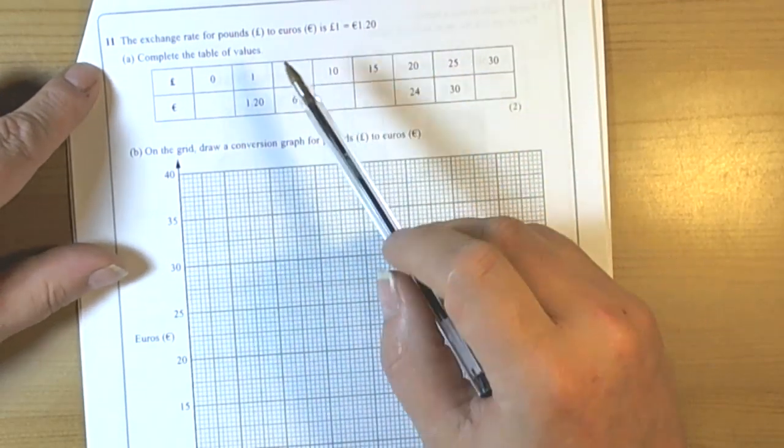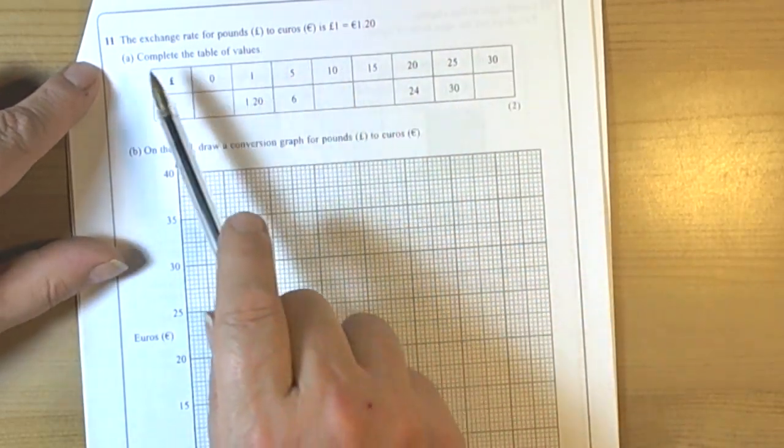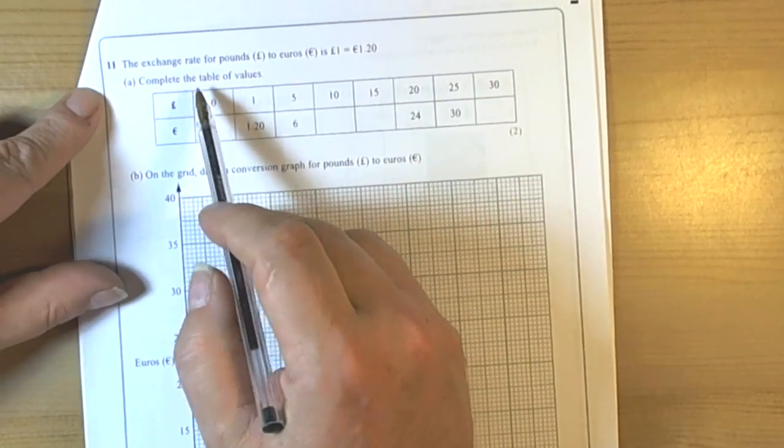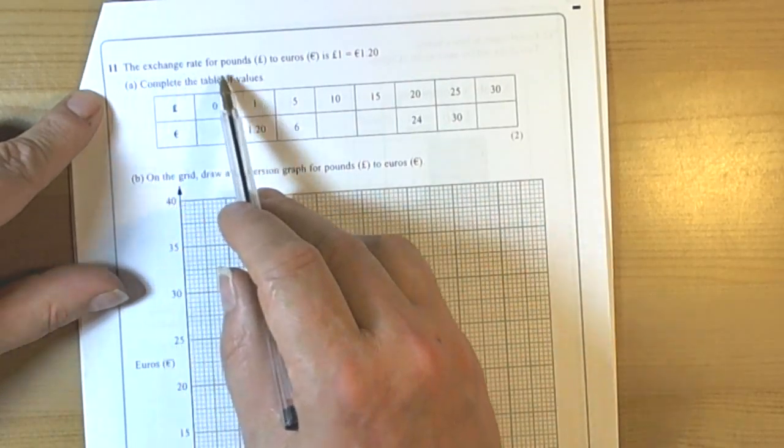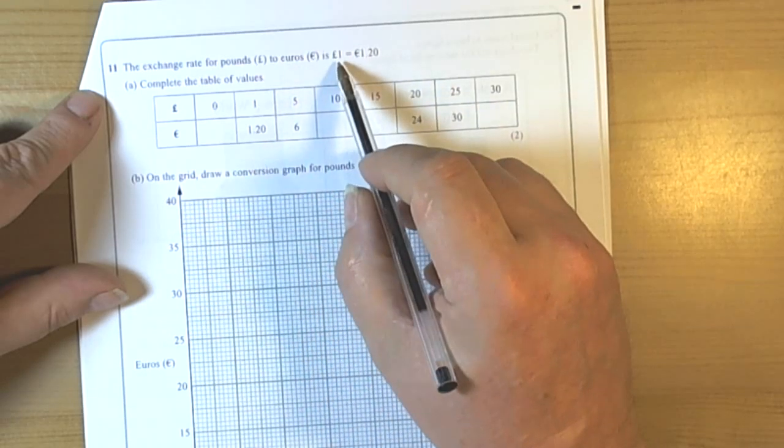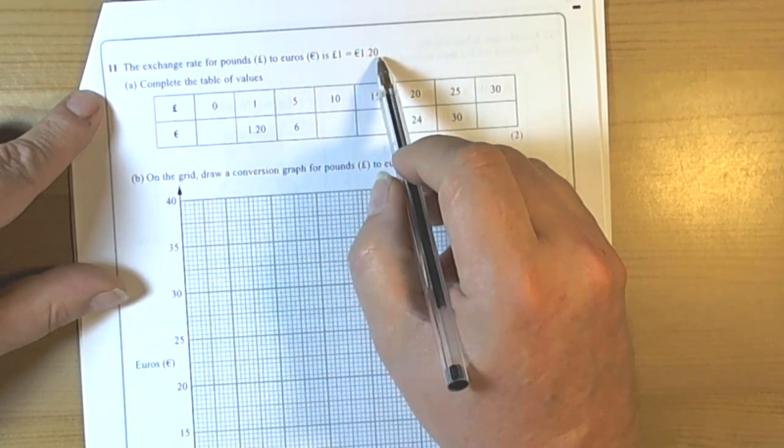With all exam questions we've got to look through and look for key information. So here in this question they're telling us that the exchange rate from pounds to euros at this particular moment was one pound is the same as one euro twenty.